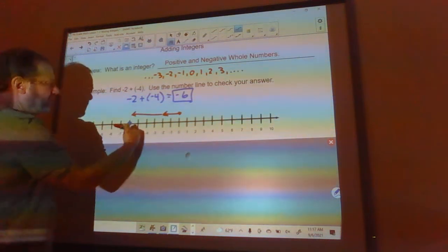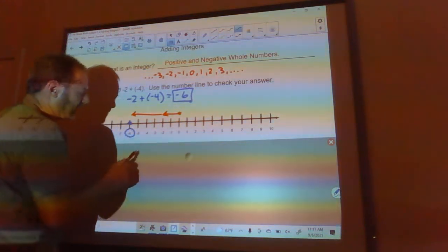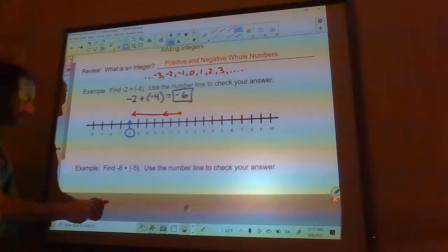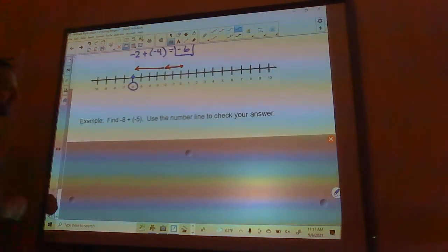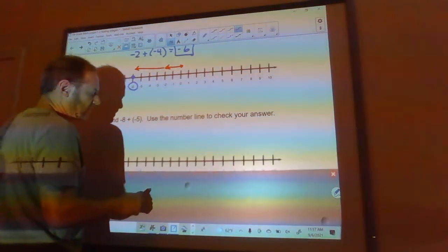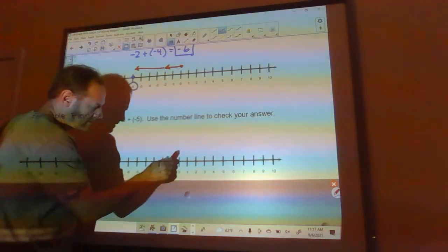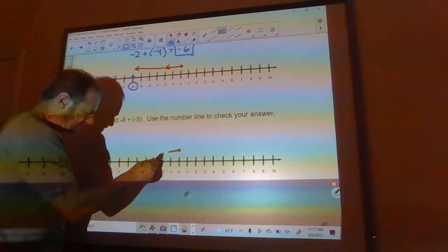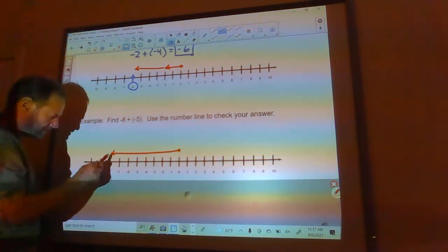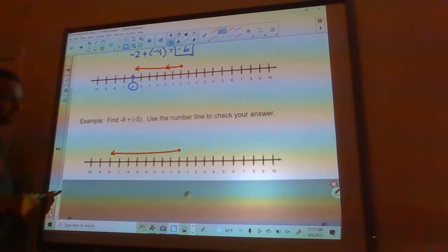So anytime you have a negative number you're going to the left, anytime you have a positive number you're going to go to the right. So here we have negative 8 plus negative 5. So we'll start out from 0. We're going to go negative 8.